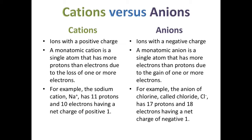Cations are ions with a positive charge. A monatomic cation is a single atom that has more protons than electrons due to the loss of one or more electrons from the atom. For example, the sodium cation has 11 protons and only 10 electrons, giving it a net charge of positive 1. All cations will have a positive charge, whether monatomic or polyatomic.